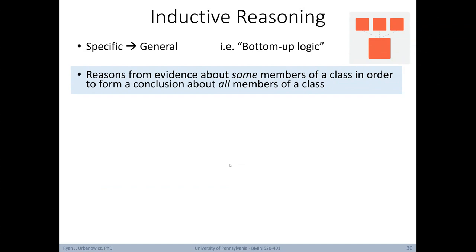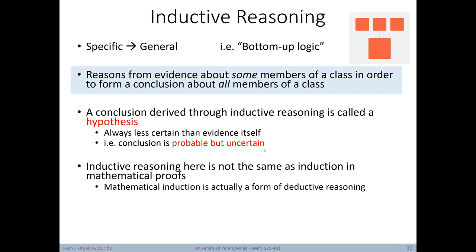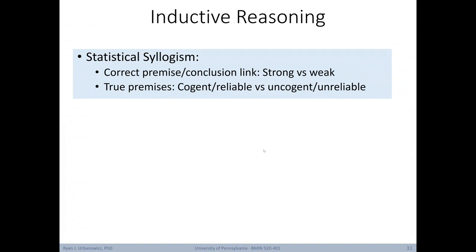Inductive reasoning goes from specific to general conclusions — bottom-up logic. We reason using evidence about some members of a class to form a conclusion about all members of that class. A conclusion from inductive reasoning is called a hypothesis — always less certain than the evidence, i.e., probable but uncertain. Note: inductive reasoning is not the same as induction in mathematical proofs — mathematical induction is actually a form of deductive reasoning. Machine learning is all about inductive reasoning: using specific instances to find useful generalizations. With inductive reasoning we can generate statistical syllogisms, where the link between premises and conclusions is described as strong or weak, and premises as cogent/reliable versus uncogent/unreliable.